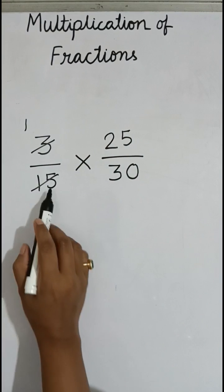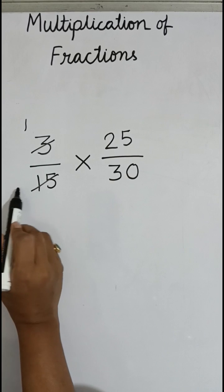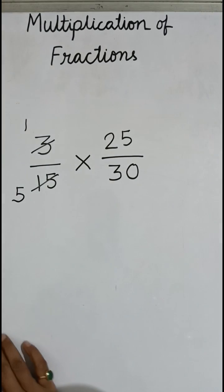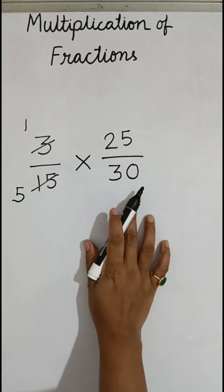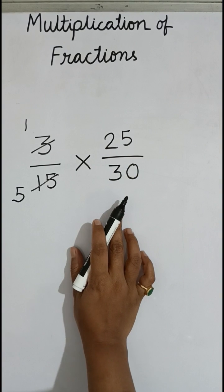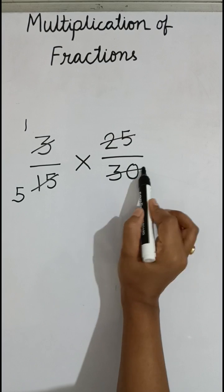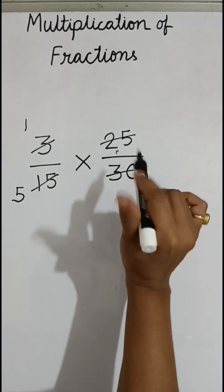Now here also 25 by 30. These two numbers come in the table of 5. So divide both by 5, the same number. 25 divided by 5, we will get 5, and 30 divided by 5 is how much? 6.